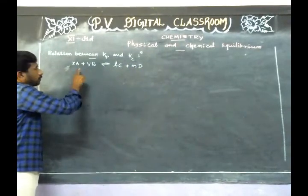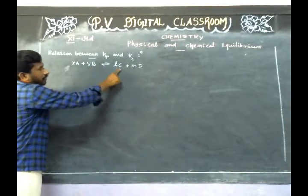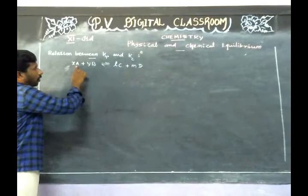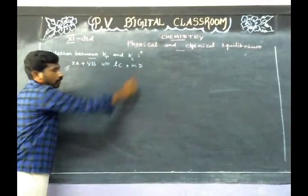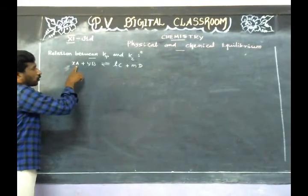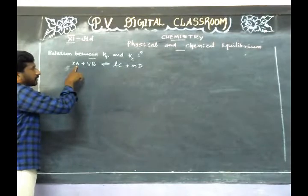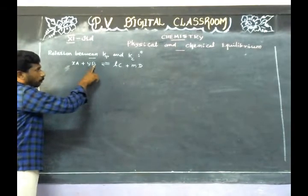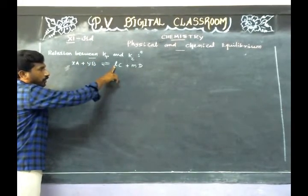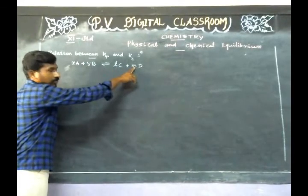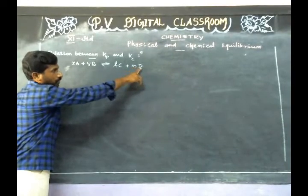Here all the reactants and products are ideal gases. X is the stoichiometric coefficient of reactant A, Y is the stoichiometric coefficient of reactant B, L is the stoichiometric coefficient of product C, and M is the stoichiometric coefficient of product D.